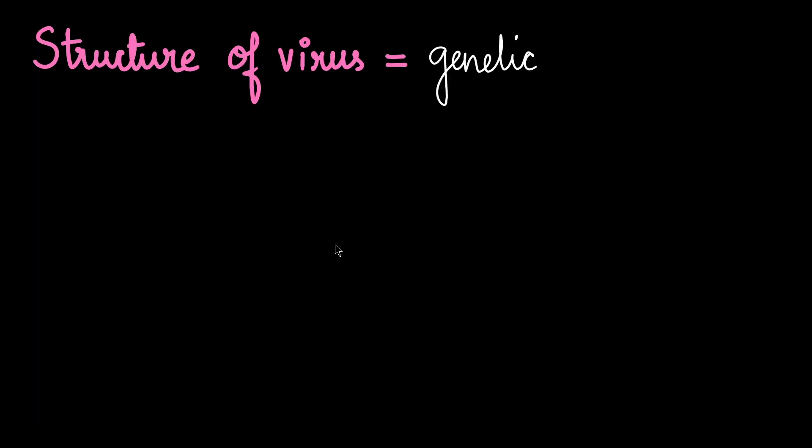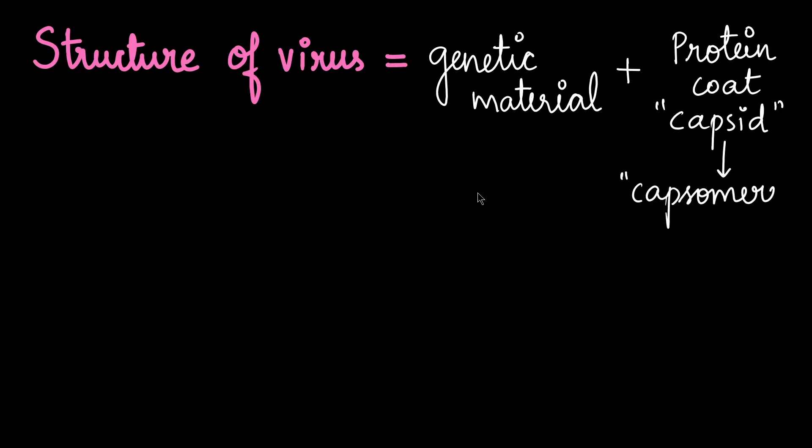Well, it's quite simple. There is a genetic material which is covered by a protein coat called the capsid. Capsid itself is made up of smaller units called capsomeres. Although this composition seems very simple, it has given rise to some very interesting shapes in viruses.